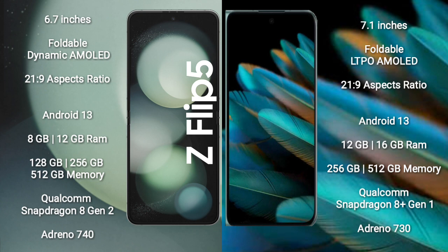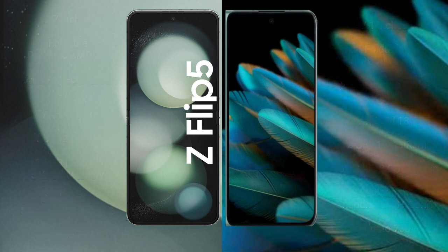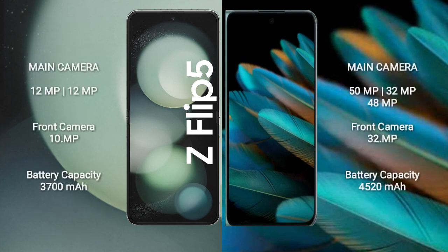Oppo Find N2 comes with 12GB or 16GB RAM and 256GB or 512GB internal storage, powered by a Qualcomm Snapdragon 8 Gen 1 processor and GPU Adreno 730.